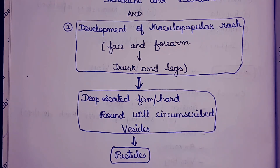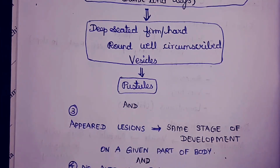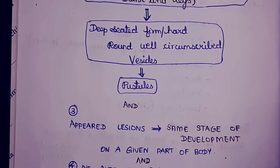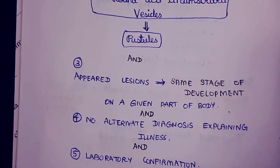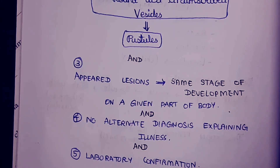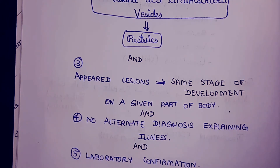A third feature is that lesions in any particular body region — face, trunk, or leg — will all be at the same stage of development. For example, if vesicles are found in the trunk region, the entire trunk will show only vesicles, with no macules or papules in that region. A fourth feature is that there should be no alternate diagnosis explaining this condition of illness.